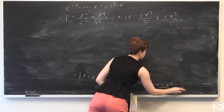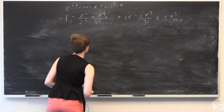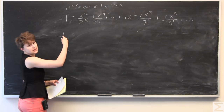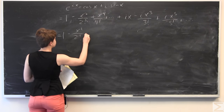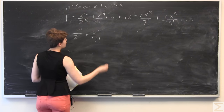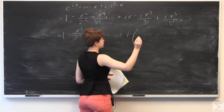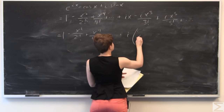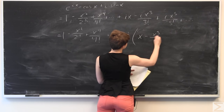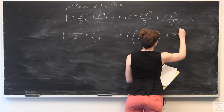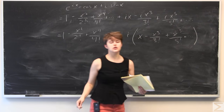Factoring out i from all the terms that have an i, we get: 1 minus x squared over 2 factorial plus x to the fourth over 4 factorial plus so on, plus i times the quantity x minus x cubed over 3 factorial plus x to the fifth over 5 factorial, and so on.